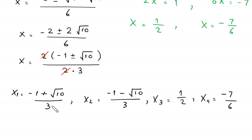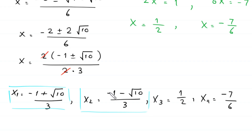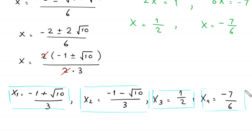So we have four solutions to this equation: x₁ = (negative 1 + √10) / 3, x₂ = (negative 1 - √10) / 3, x₃ = 1/2, and x₄ = negative 7/6.